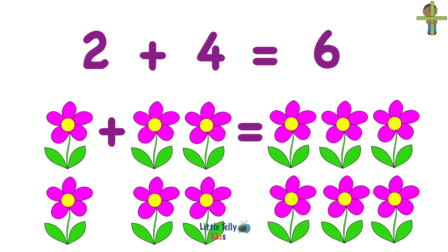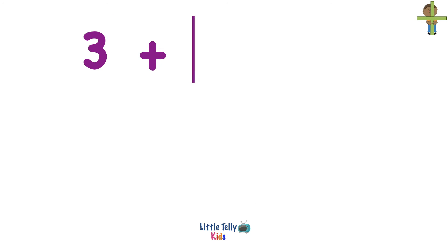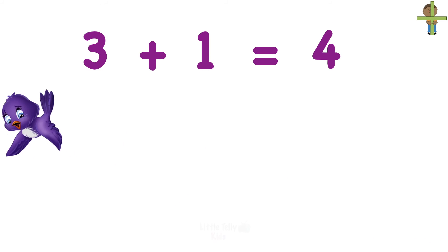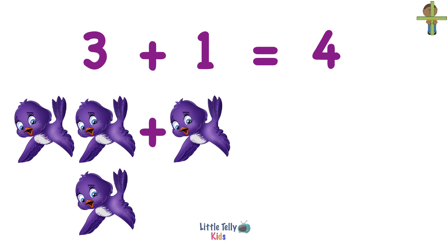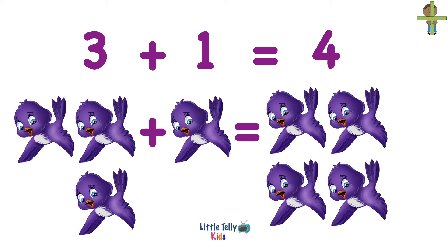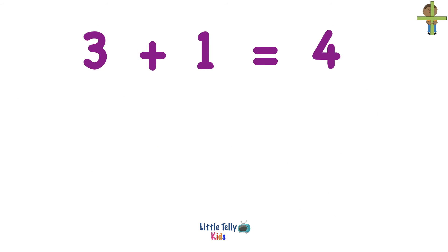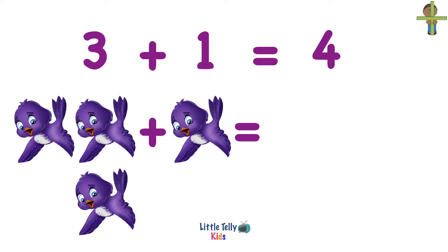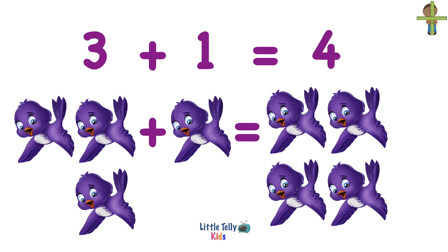Now let's solve another addition problem. 3 plus 1 equals 4. Let's try to understand with the help of an example. So 3 birds plus 1 bird equals 1, 2, 3, 4. 4 birds. Let's look at it once again. There are 3 birds, plus now 1 more bird comes in. 3 birds and 1 bird equals 4 birds.